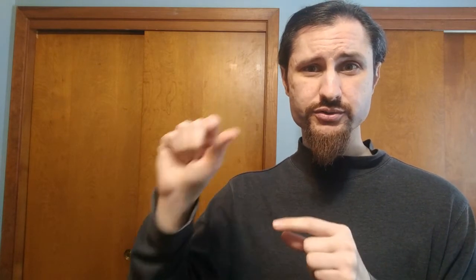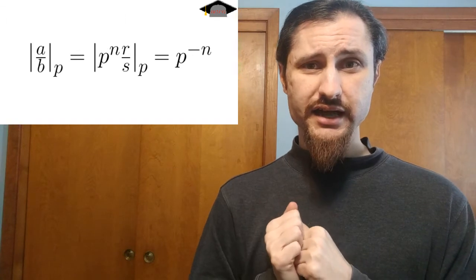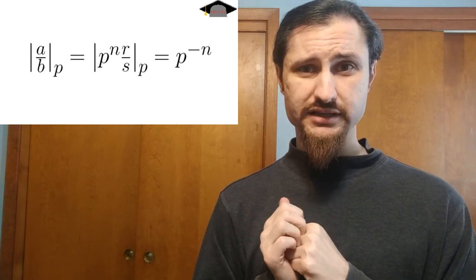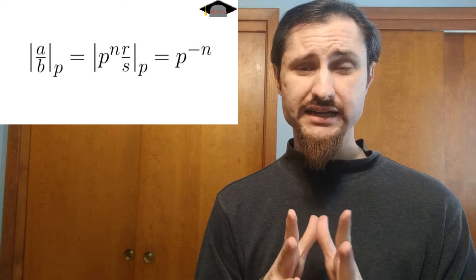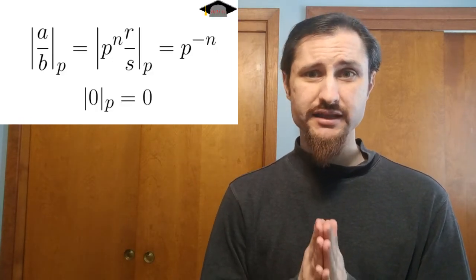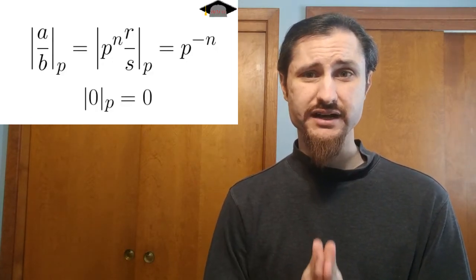Once you've done that, we define the p-adic absolute value of A over B to be P to the negative power of whatever that exponent you came up with a step ago. That's the p-adic absolute value. So then the p-adic distance between two rational numbers will be the p-adic absolute value of their subtraction. And then once we throw in the caveat that the p-adic absolute value of zero is zero, this now gives us enough to define a p-adic metric on the set of rational numbers.